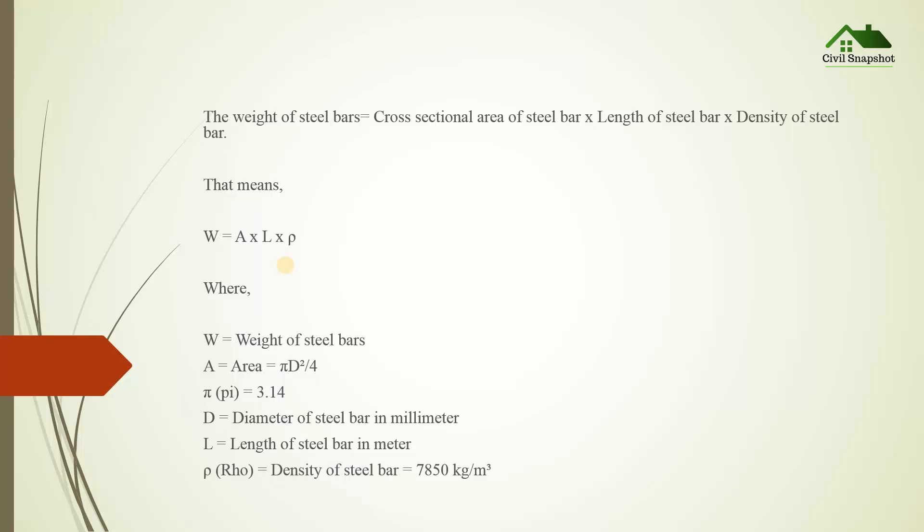The weight of steel bars equals cross sectional area of steel bar times length of steel bar times density of steel bar. That means W = A × L × ρ, where W is the weight of steel bars.